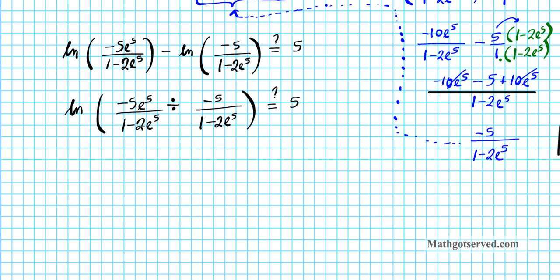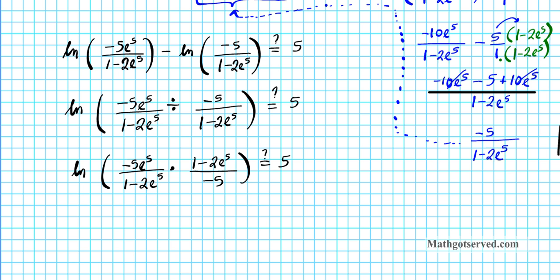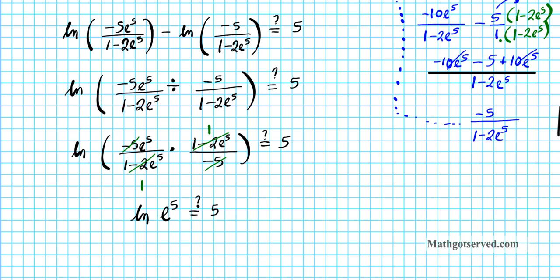The 1 minus 2e to the fifth terms cancel, and the negative 5 terms cancel. We're left with the natural logarithm of e to the fifth. Is it equal to 5? Using the inverse property, the ln and e cancel each other out, leaving the statement 5 equals 5. The answer is yes — we're confident our answer is correct.